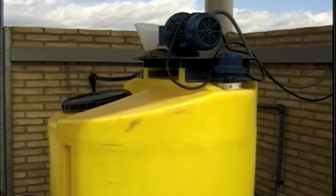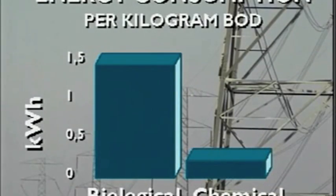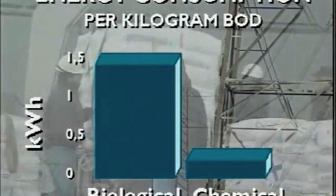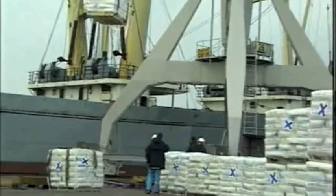Chemical purification requires addition of coagulants, which is done in a small pool and at low energy consumption. The total energy used for chemical treatment is only 15% of that required for biological treatment, even if the energy used for production and the distribution of coagulants is included.